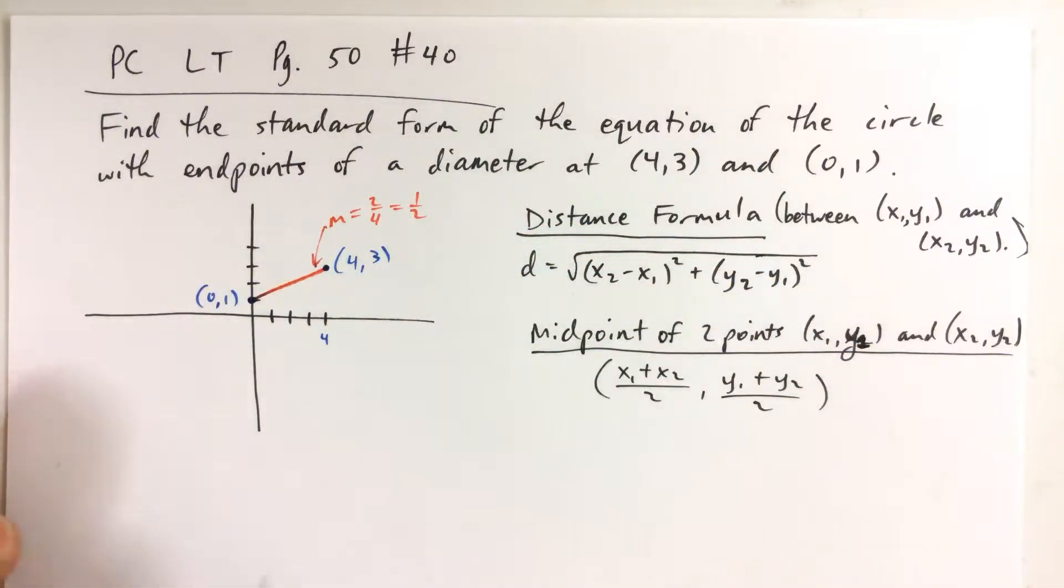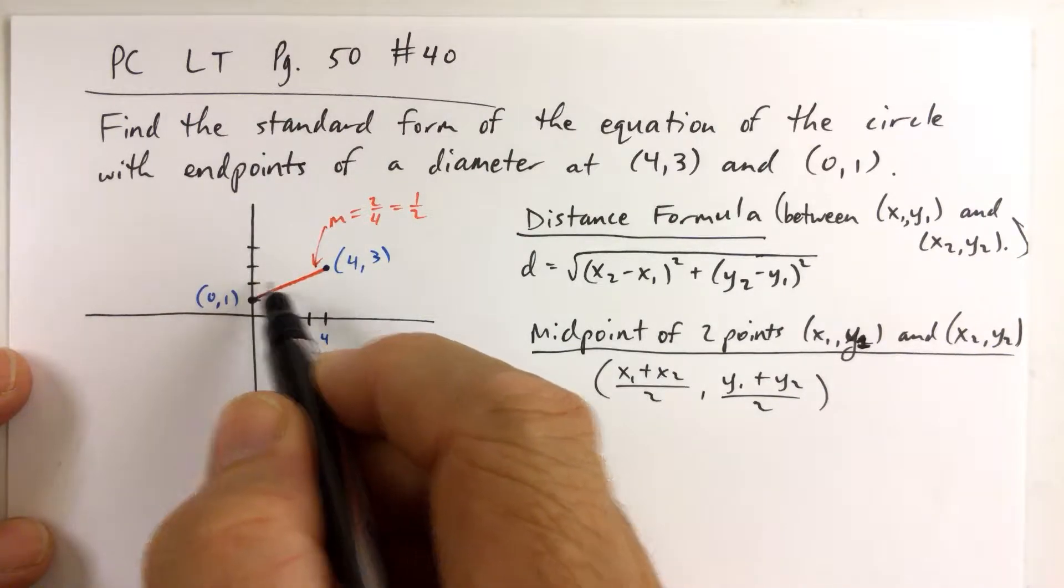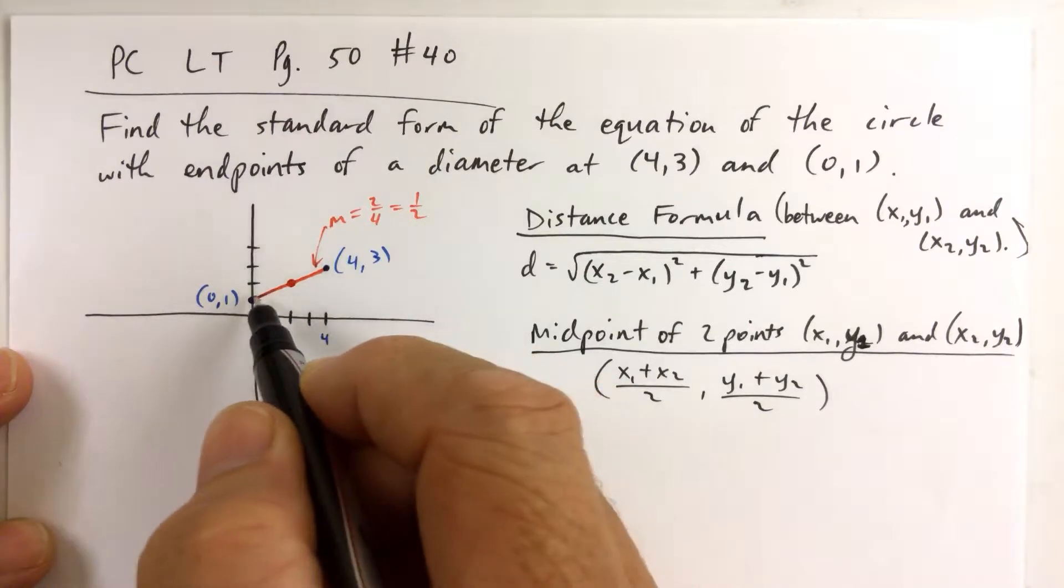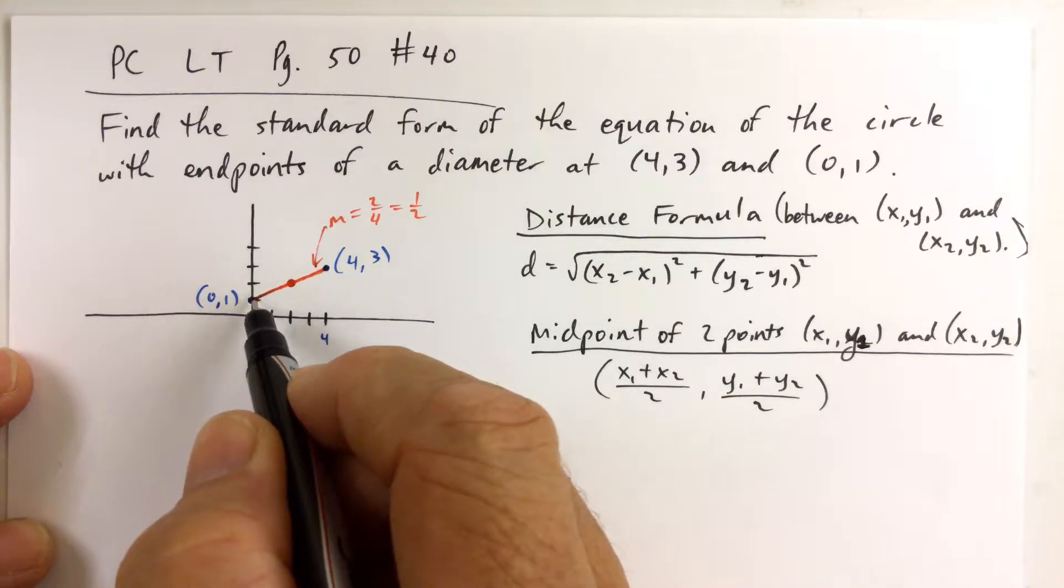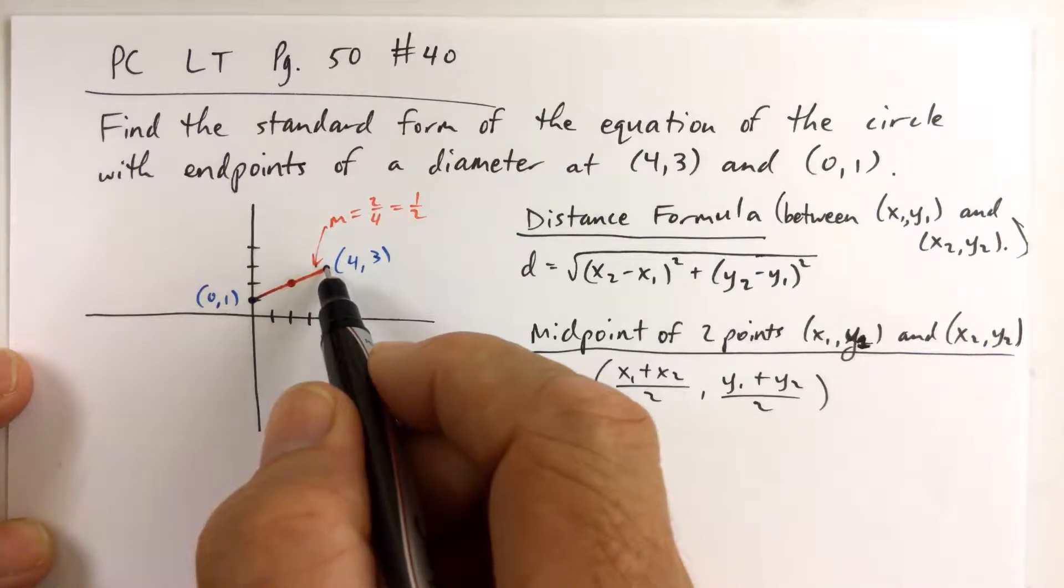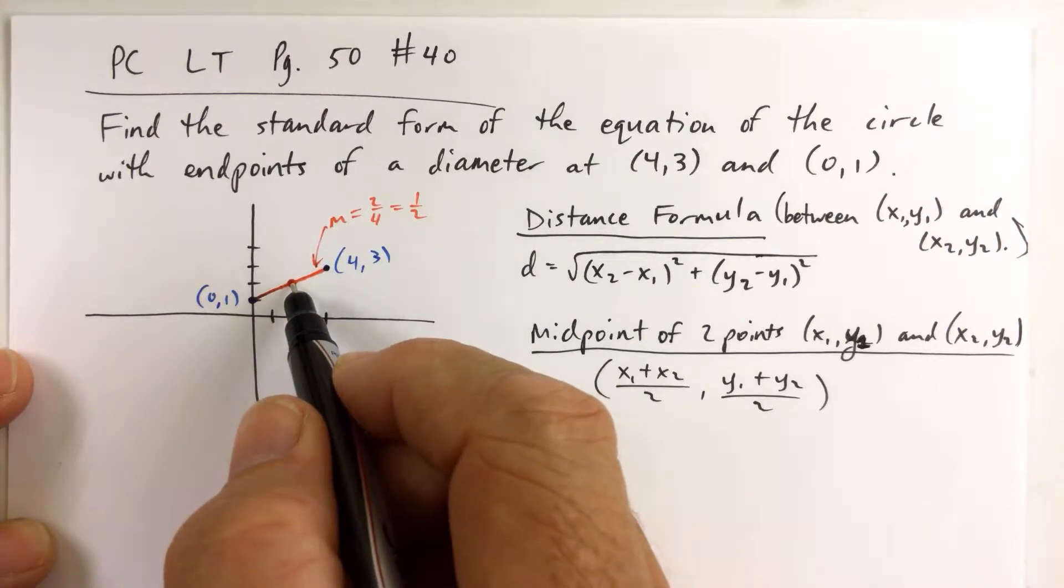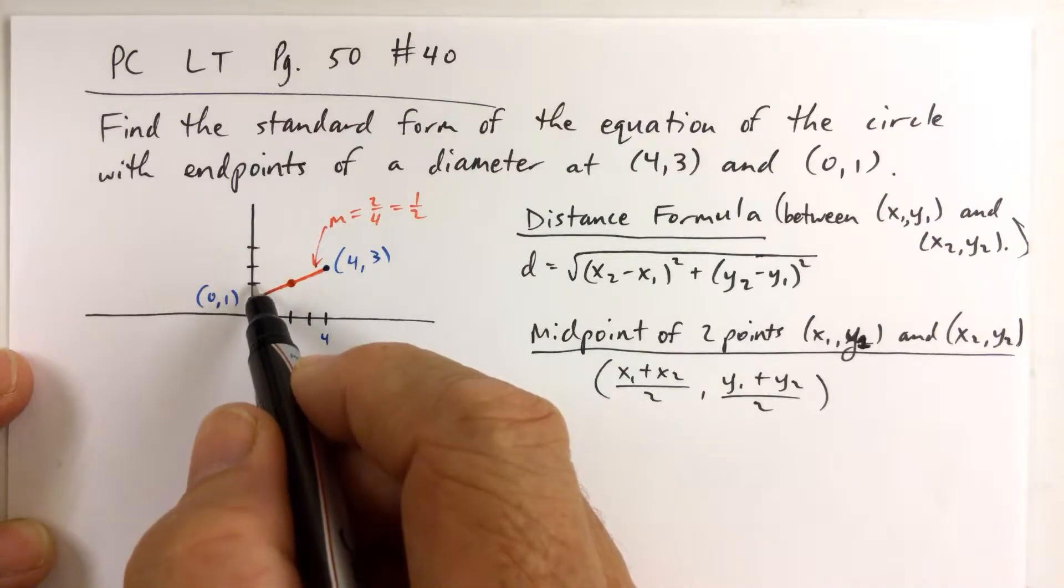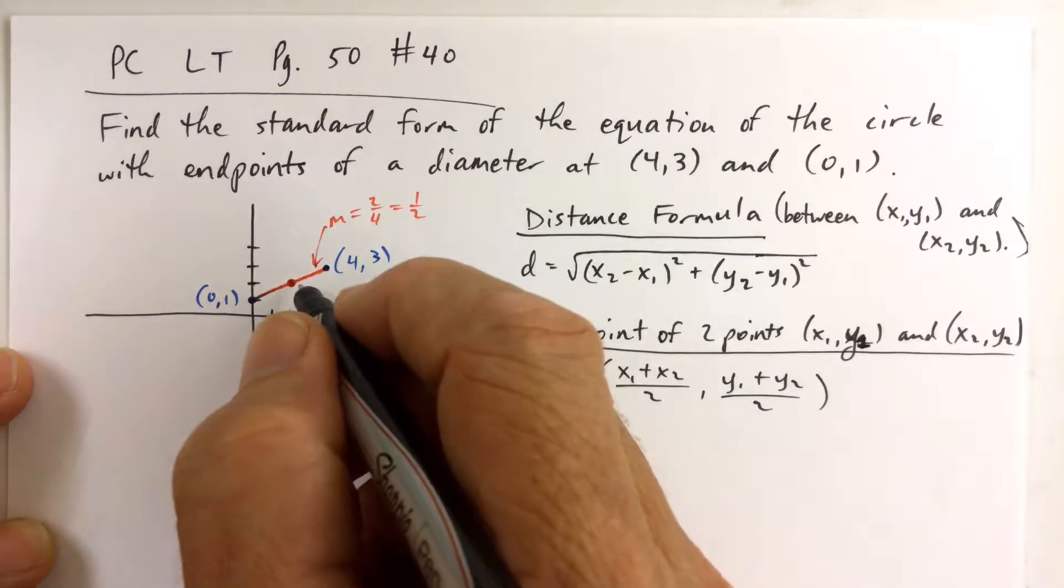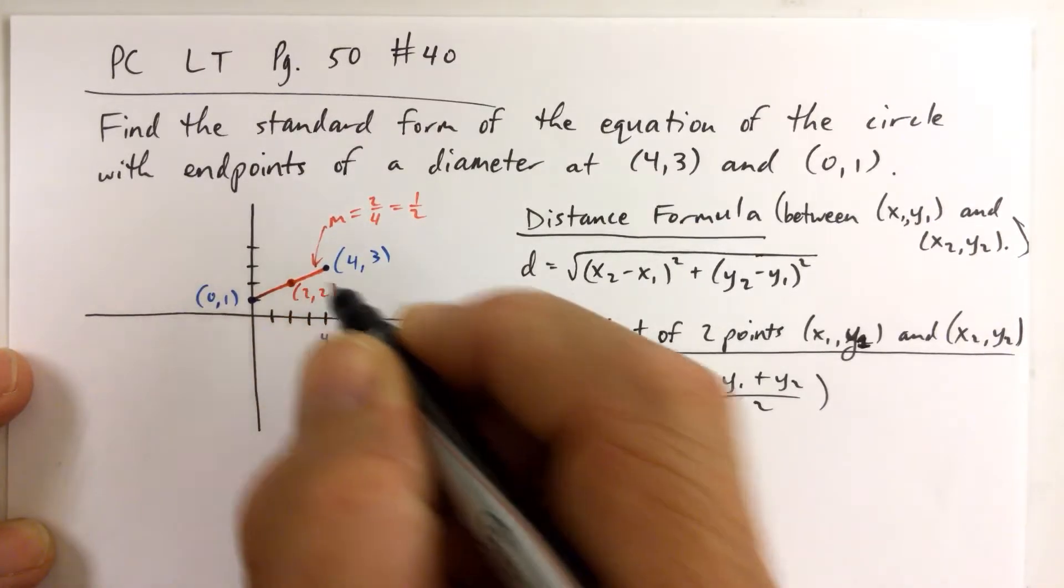So if the slope of the line is 1/2, then we can go up 1 and over 2 to get another point on the line. If you go up 1 and over 2, and then from that point, if you go up 1 and over 2, you get to the other point on the end of the diameter, which means that that point right there is actually at the center of the circle. Going up 1 from (0,1), you're at (0,2), so you're 2 units high, and over 2 means you're 2 units over. So the coordinates of the center of the circle are (2,2).